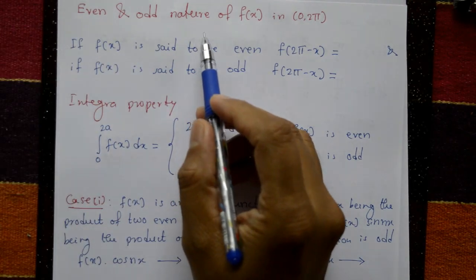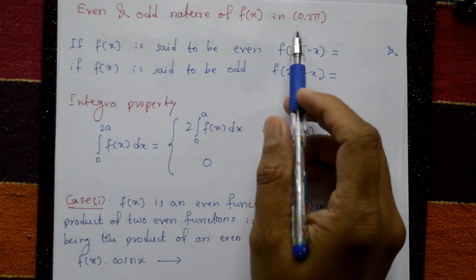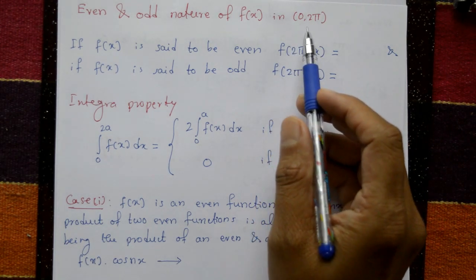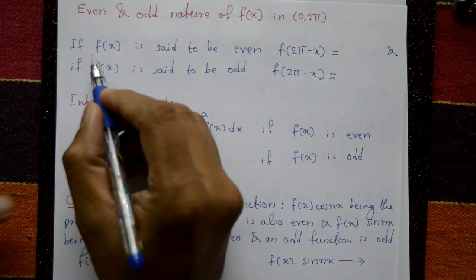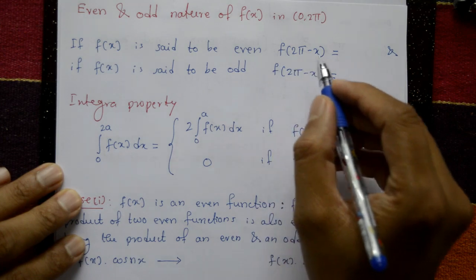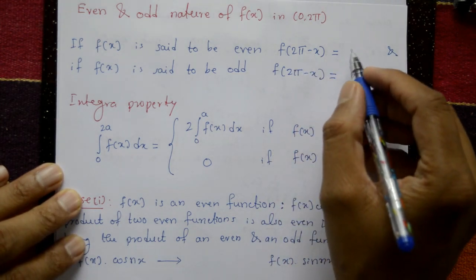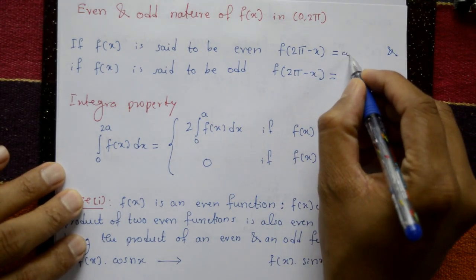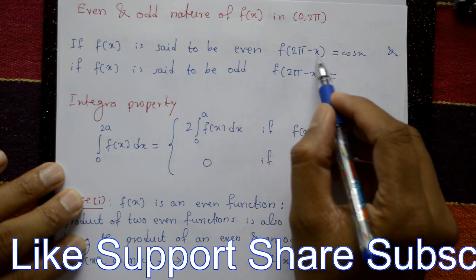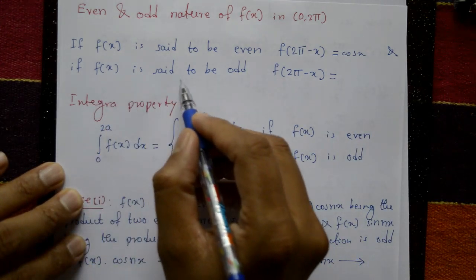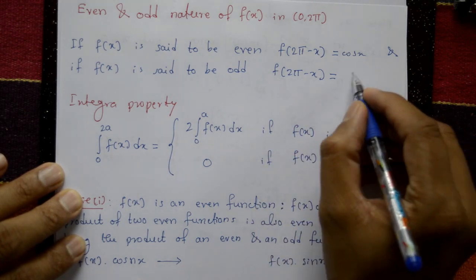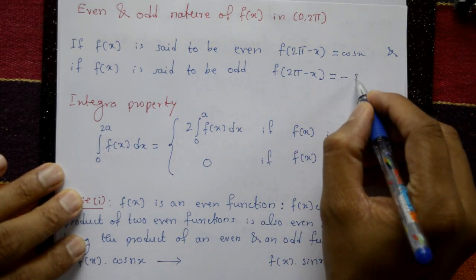We discuss the even and odd nature of f(x) on the interval 0 to 2π. If f(x) is said to be even, then f(2π − x) = cos x — the function is even. If f(x) is said to be odd, then f(2π − x) = −sin x — the function is odd.